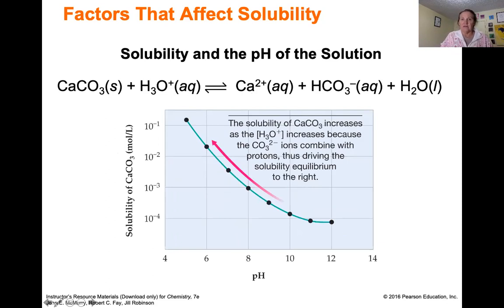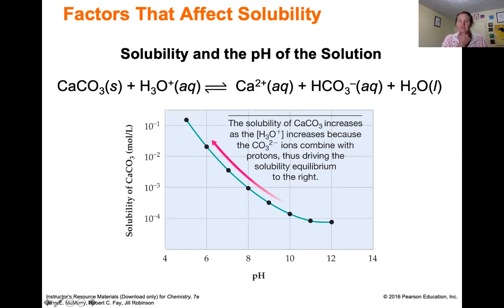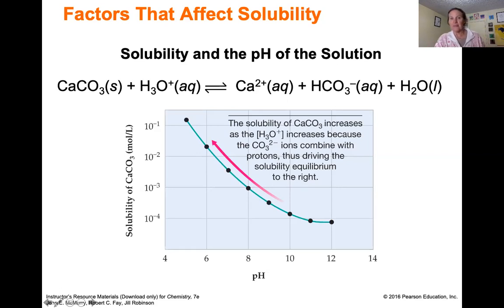Solubility also depends on the pH of the solution. If we dissolve calcium carbonate in acid, the carbonate reacts with the hydronium ion to produce Ca²⁺ and HCO₃⁻ (bicarbonate). Because of that reaction, calcium carbonate solubility increases as you add H₃O⁺ — as it dissolves, the carbonate is consumed by the acid and converted to bicarbonate, pulling the equilibrium forward.